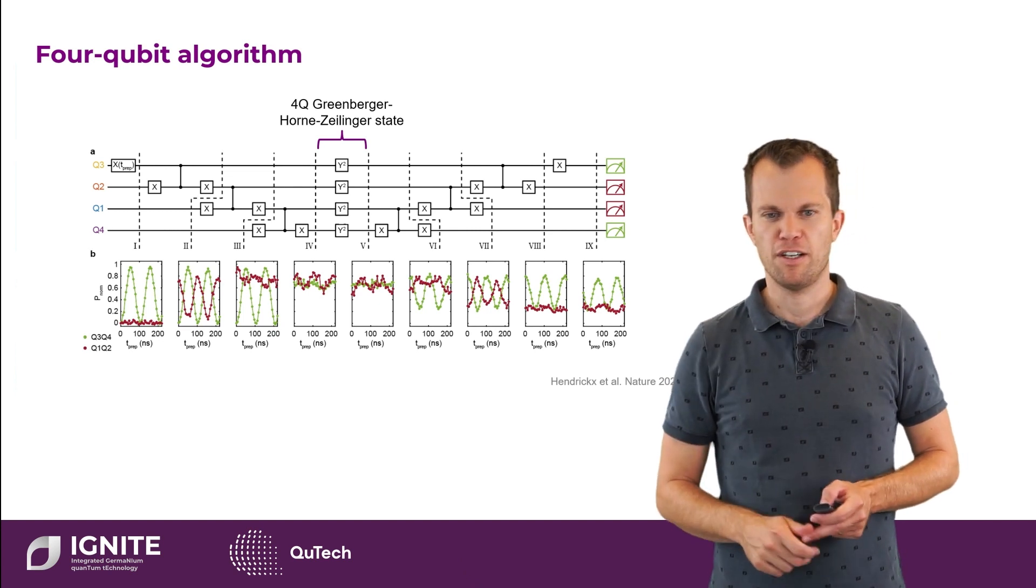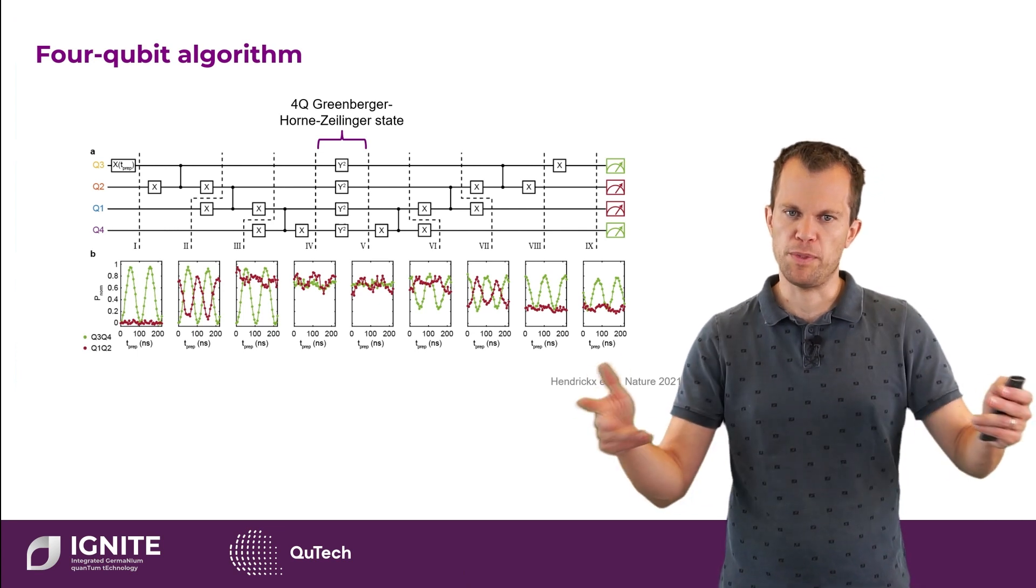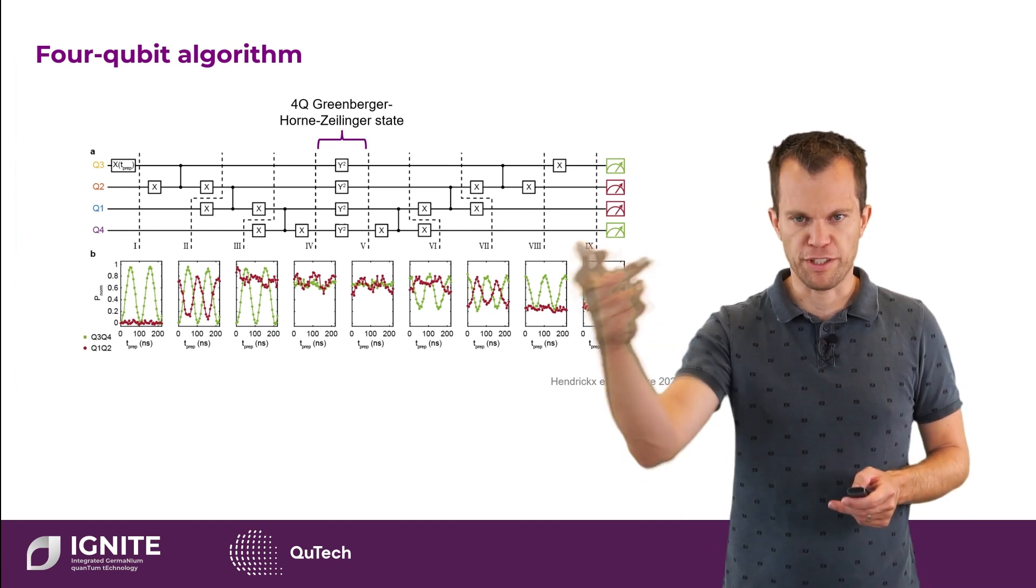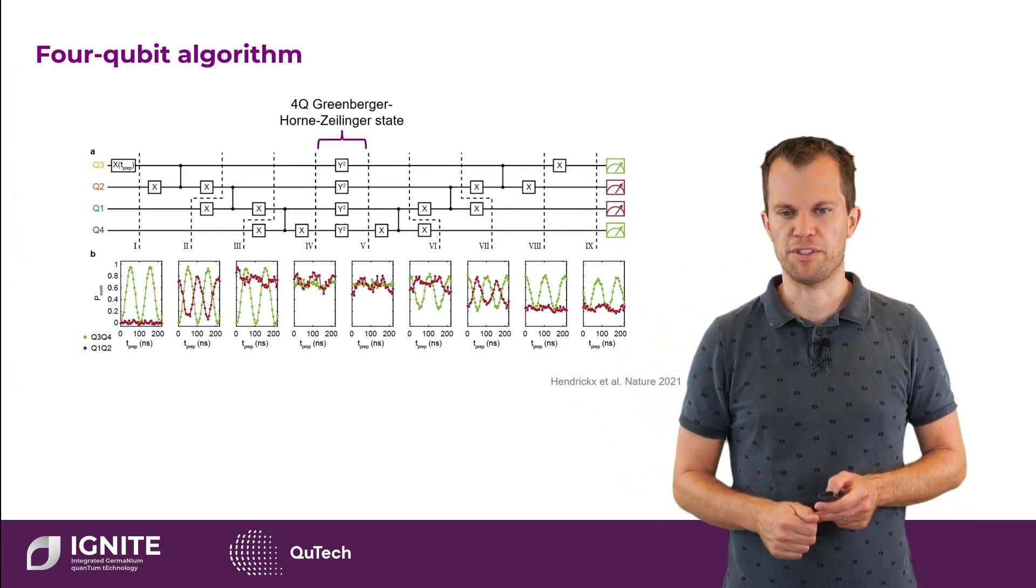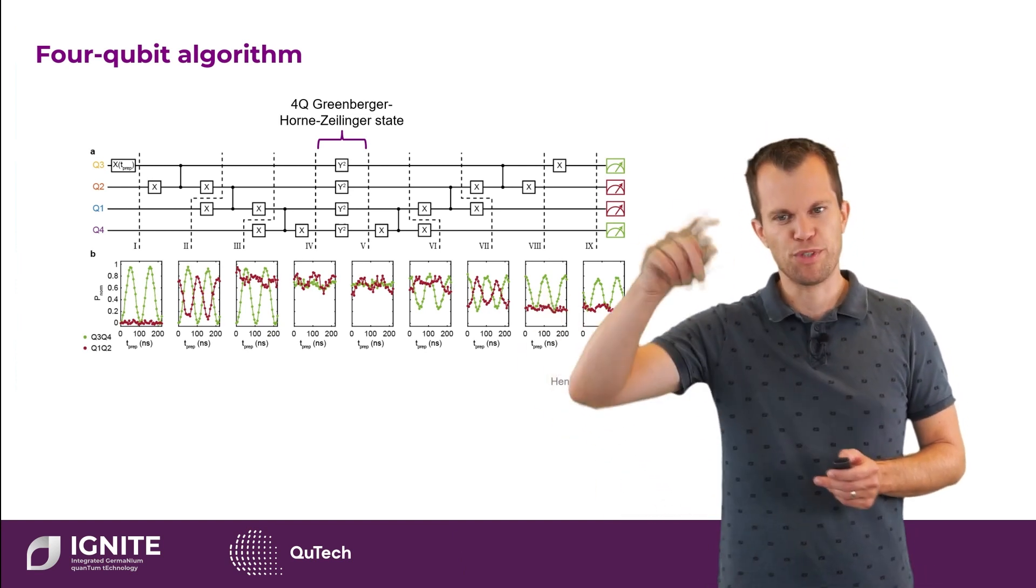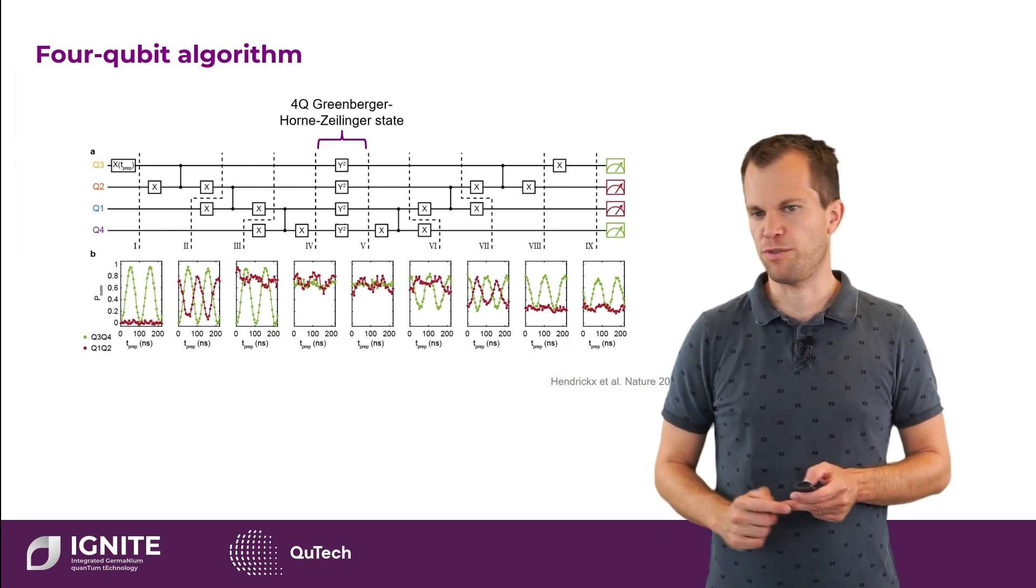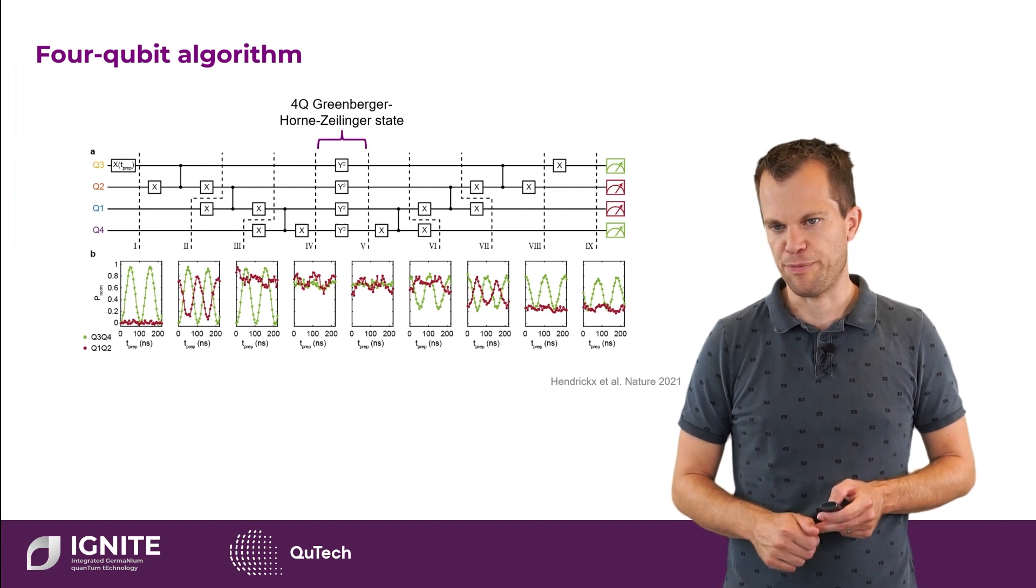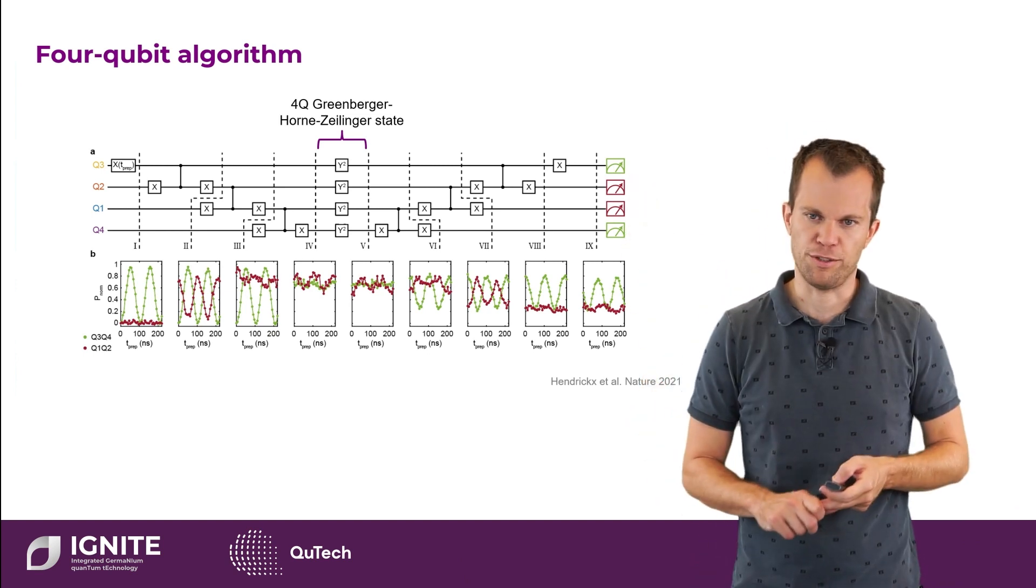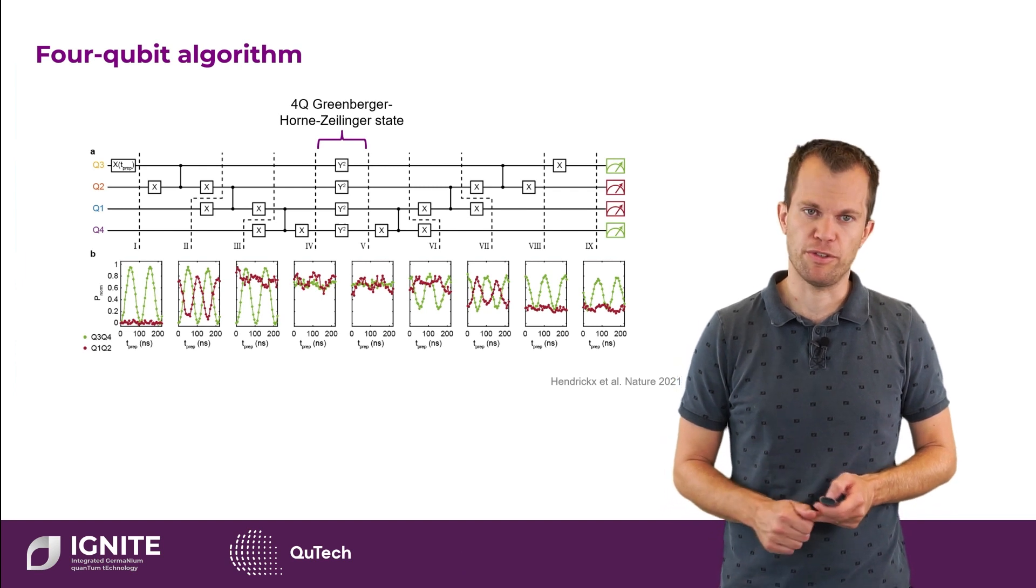Which is to expect if all qubits are entangled with each other, because if we then measure them we obtain no information because we don't have sufficient measurement to extract all the information. If we then continue the algorithm by disentangling the qubits, we start to observe the oscillations back again. In particular at the end we retrieve our original operation back, demonstrating that we entangled and disentangled then the entire array. Showcasing that we can execute a quantum algorithm.